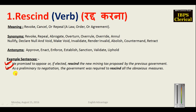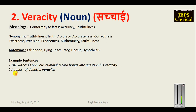The second word is 'veracity,' which means truthfulness, or conformity to facts — accuracy, precision, correctness, faithfulness, accurateness, preciseness, and exactness. The corresponding antonyms are falsehood, lying, inaccuracy, and deceit — meaning to cheat or bluff someone. The noun form of deceit is deception. Another word, swindle, also means to bluff someone, and hypothesis means imagination.